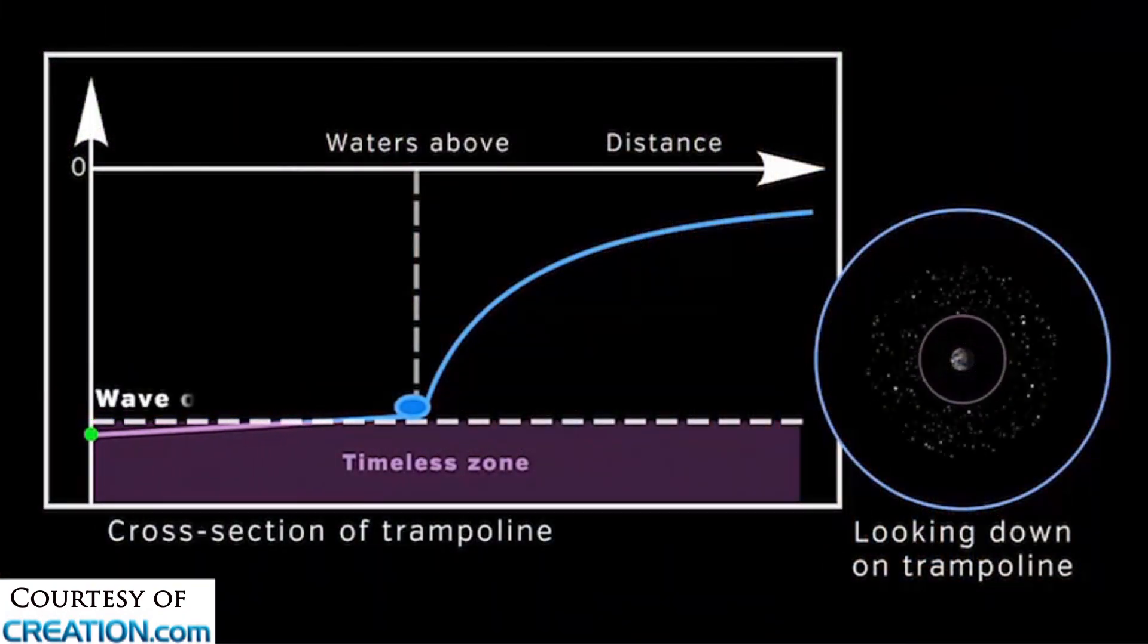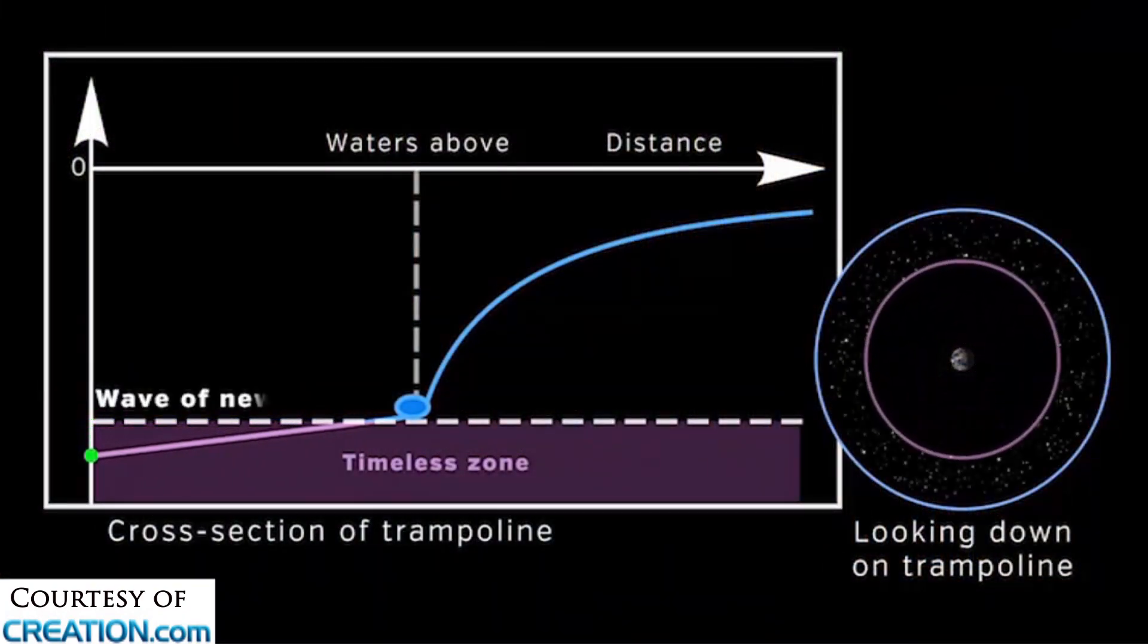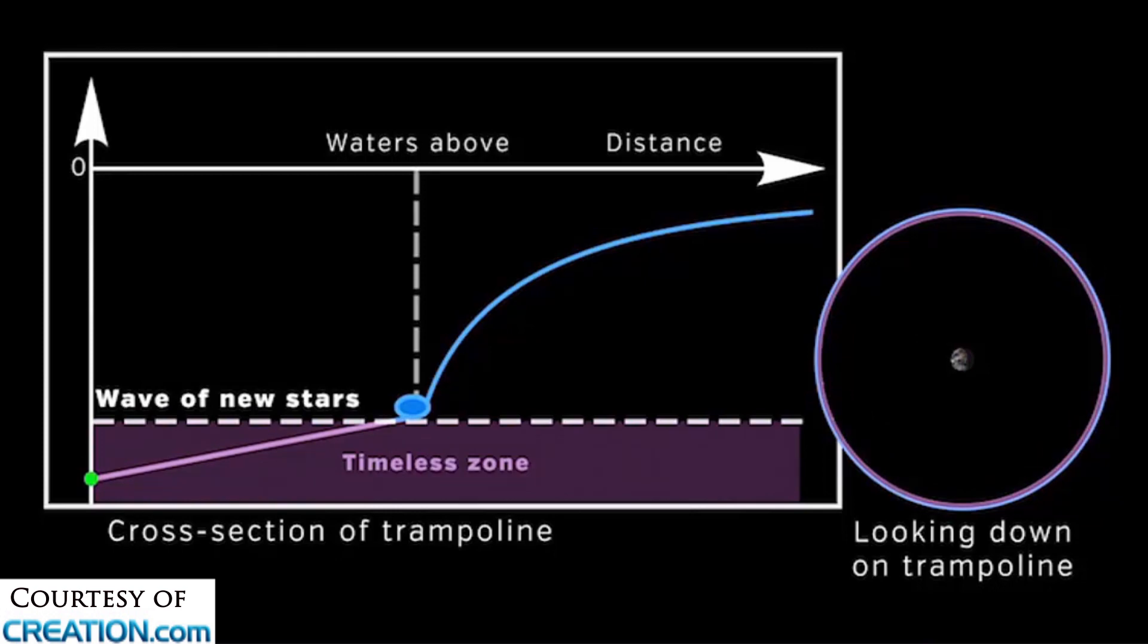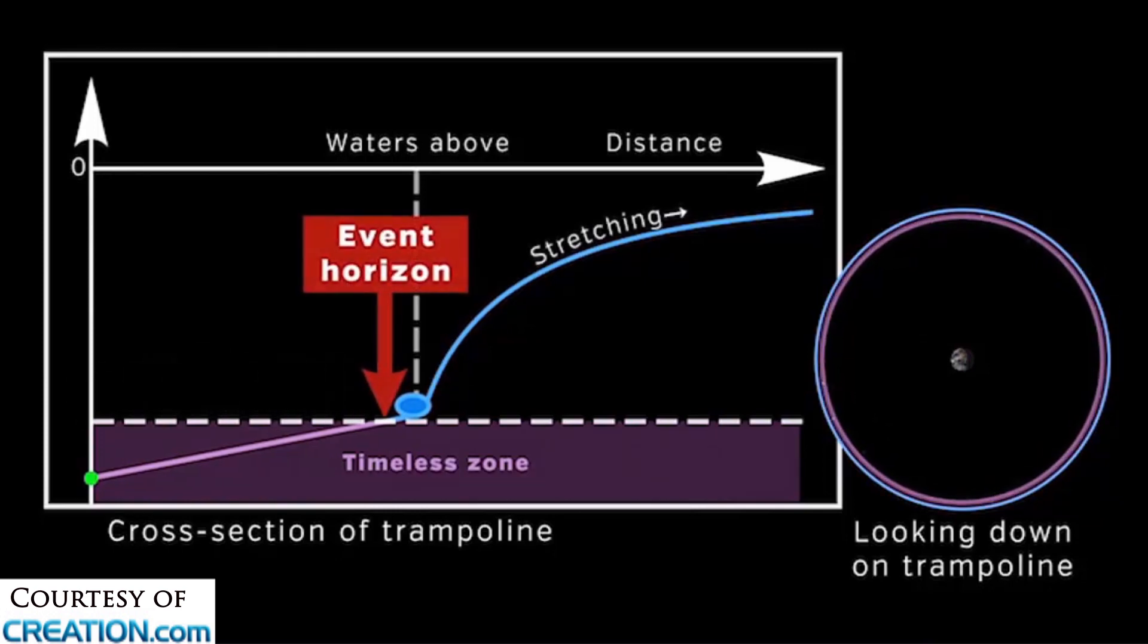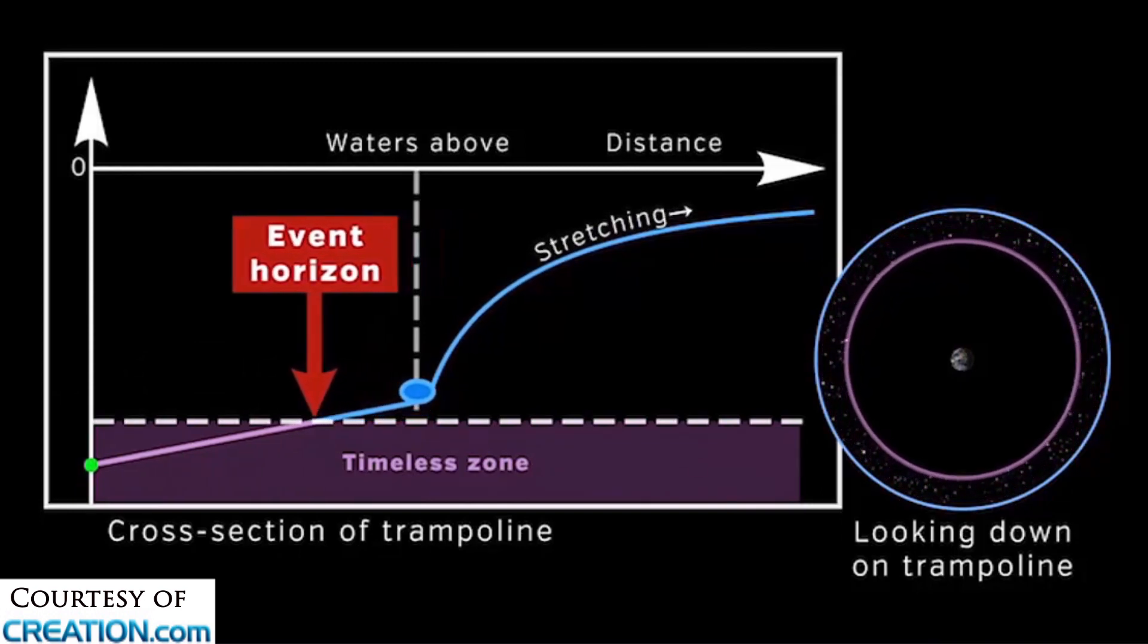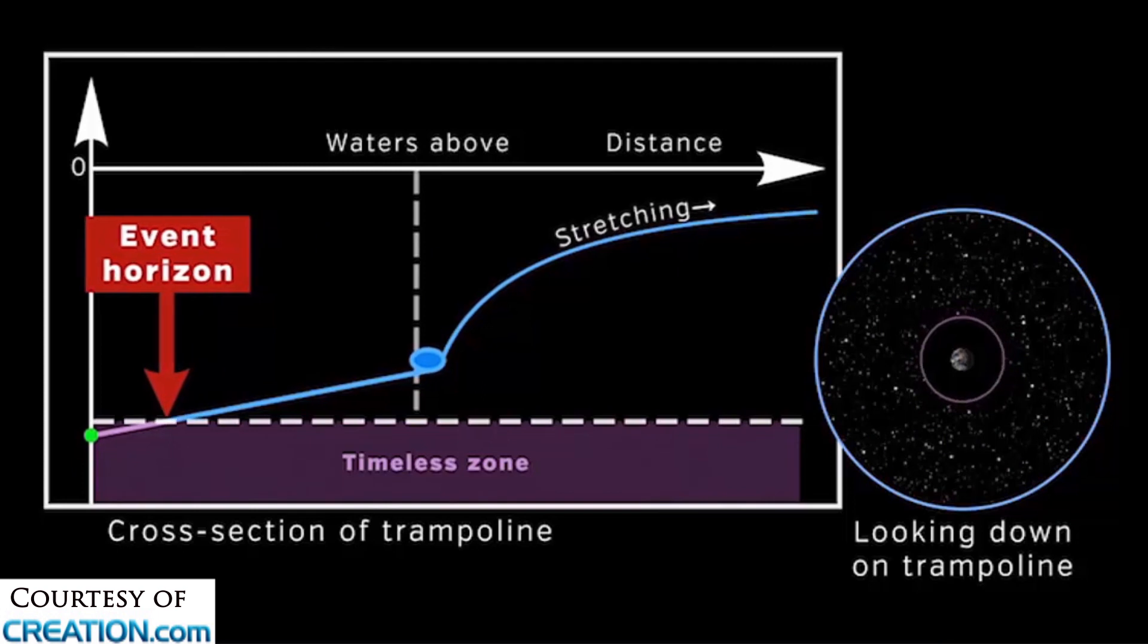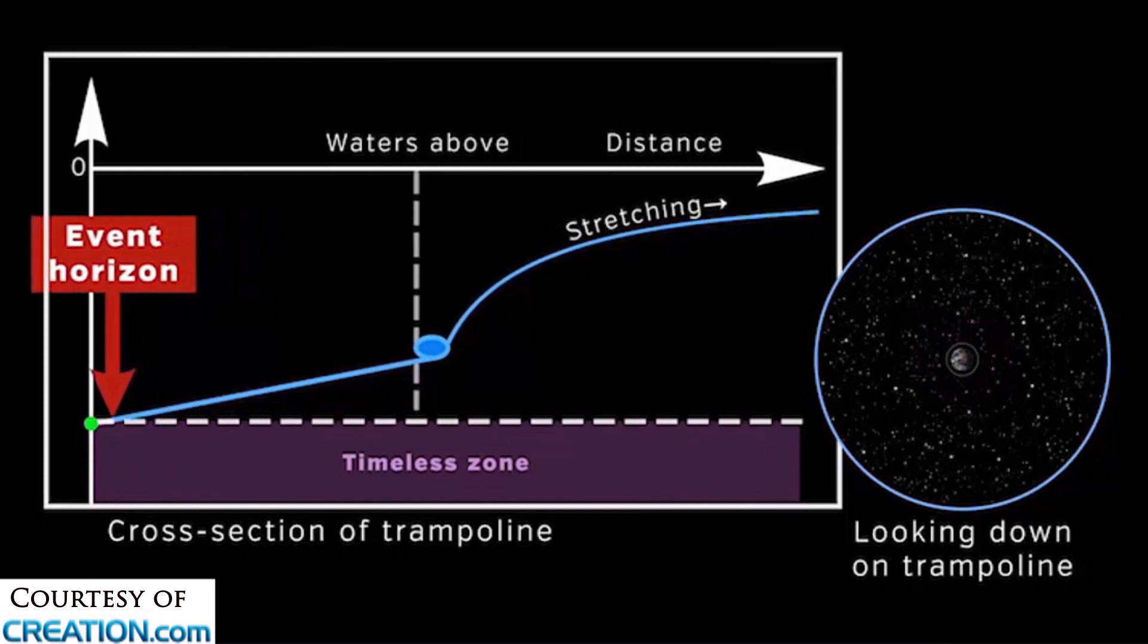Remember God made the new stars in a wave. And we're going to see that a timeless zone followed the new wave of stars. And then as stretching started pulling the dent out of the timeless zone, you're going to see the timeless zone here shrinking. So the Earth was the first into the timeless zone and the last out of the timeless zone.